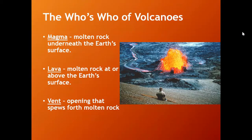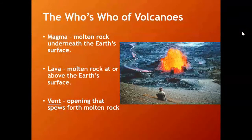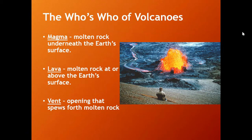First off, we've got magma, and that's the term used to describe any kind of molten rock — melted minerals and crystals, all of them in a melt with dissolved gases. That's magma, and that's the term used to describe molten rock underground. When rock is at or near the Earth's surface, we call it lava, but it's the same stuff. Magma and lava are the same thing. And the actual opening in the Earth where the stuff comes out — that's called the vent, the volcanic vent.